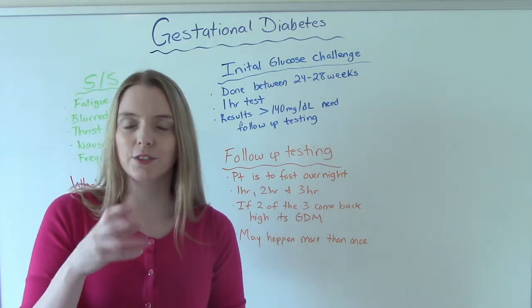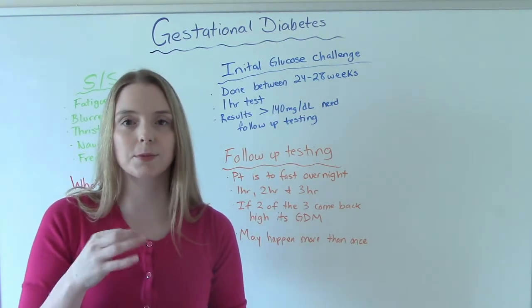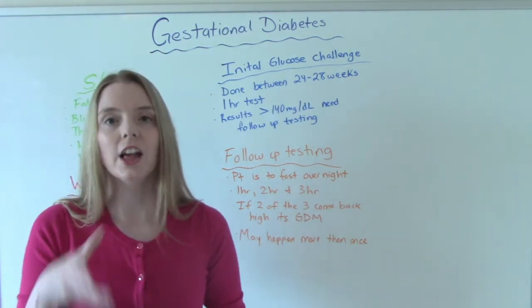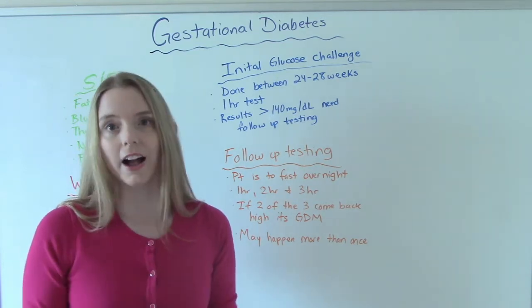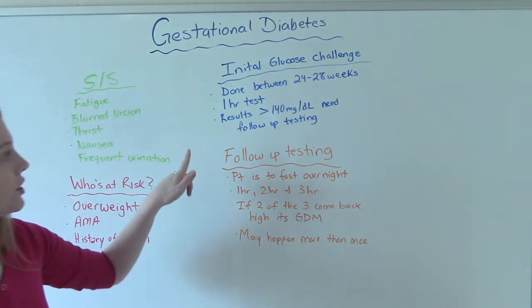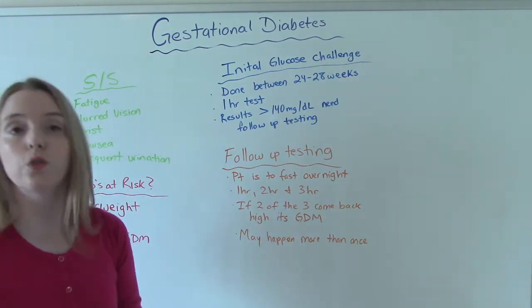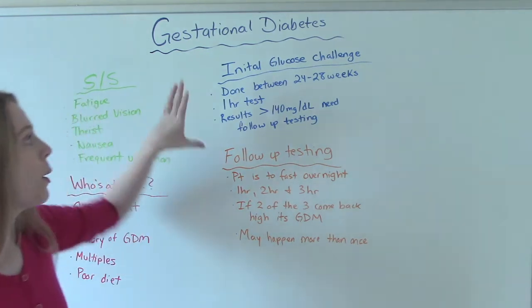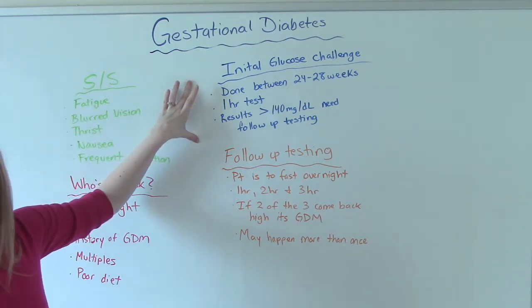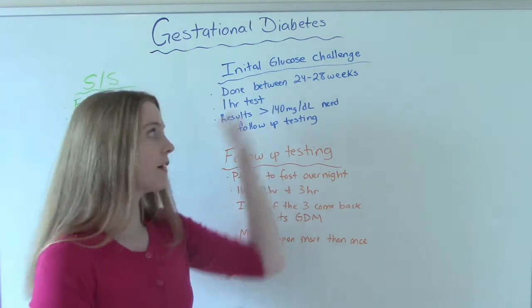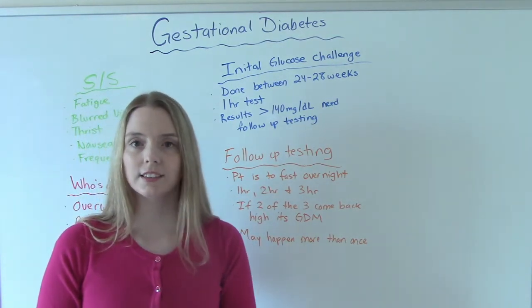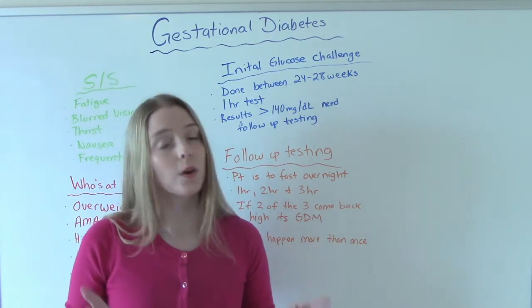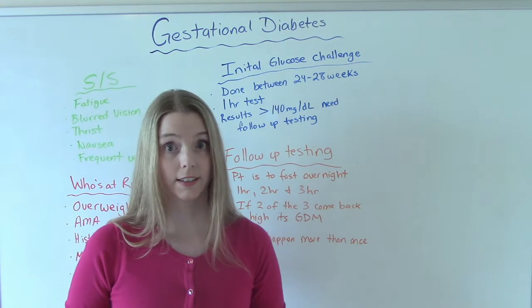They give you that glucose-containing substance — it doesn't really taste like anything, or you can get it flavored. You drink it, you wait an hour, and then they check. If your blood sugar results are greater than 140, then you need follow-up testing. This is not enough to diagnose you. If you get this initial test done and have a bad result, they're not going to say you have gestational diabetes — they're going to say this is proof that we need some follow-up testing done.